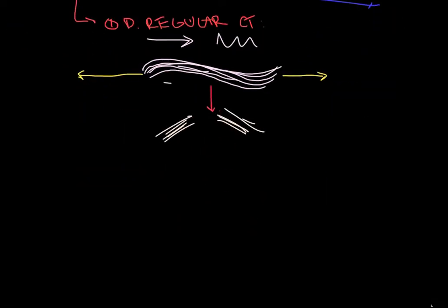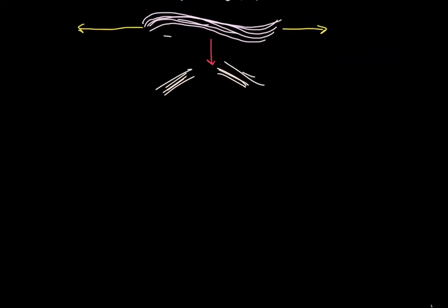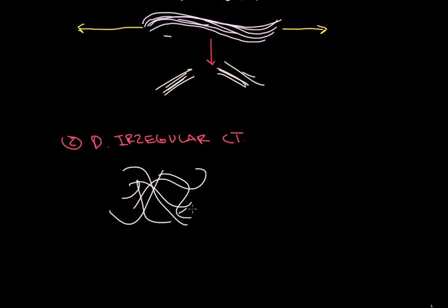So if that's dense regular, hopefully the opposite of dense regular is dense irregular CT. And this is going to be kind of a mess. Kind of whatever, collagen fibers do what they want. So let's think about this: if they're going all sorts of different ways, if I pull it this way we're fine, pull this way we're fine.